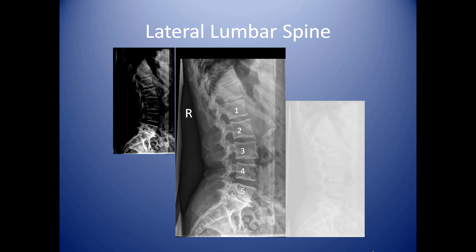Here is an evaluation of the lateral lumbar spine. We enumerate the vertebrae counting back from the sacrum — that triangular-looking bone at the bottom — counting 5, 4, 3, 2, 1. You can also use the spinous processes in the back to help count, especially if a patient has a crushed spine and counting is difficult. This film is marked 'right,' indicating that the patient's right side was down on the table. Whichever side is down against the film is the side you mark.